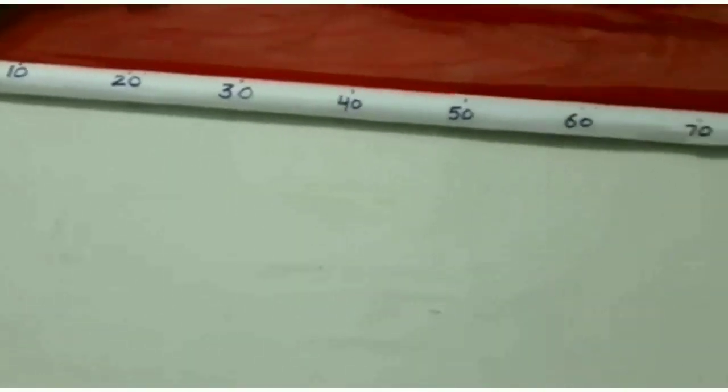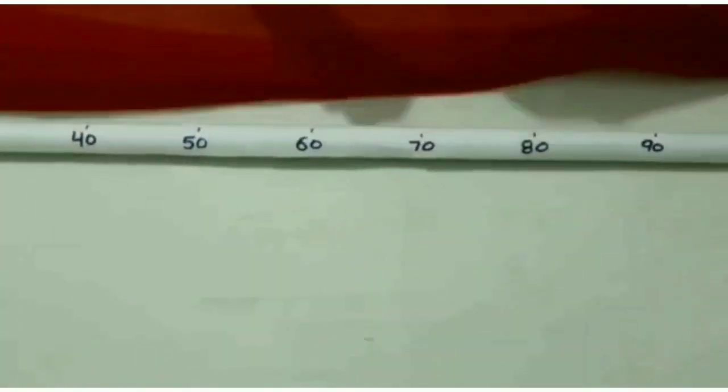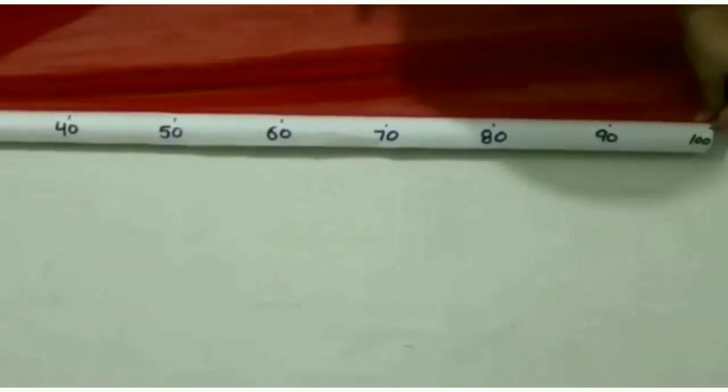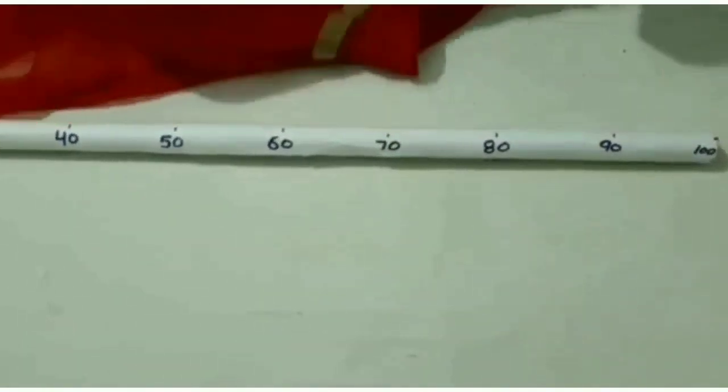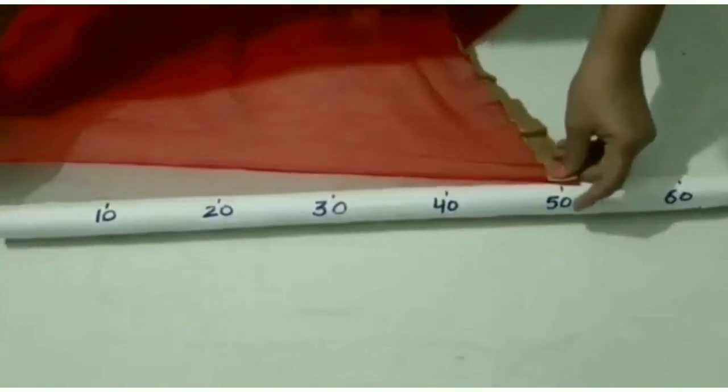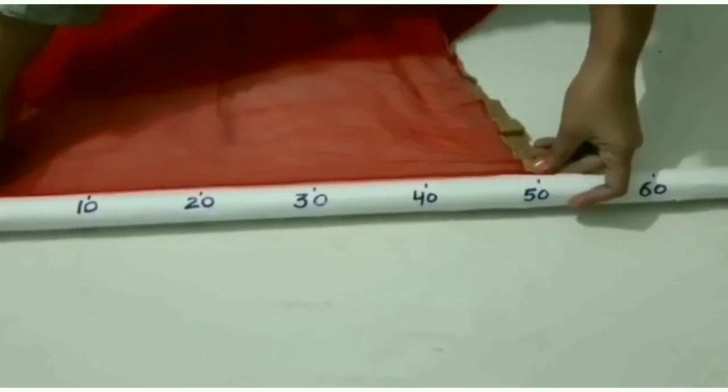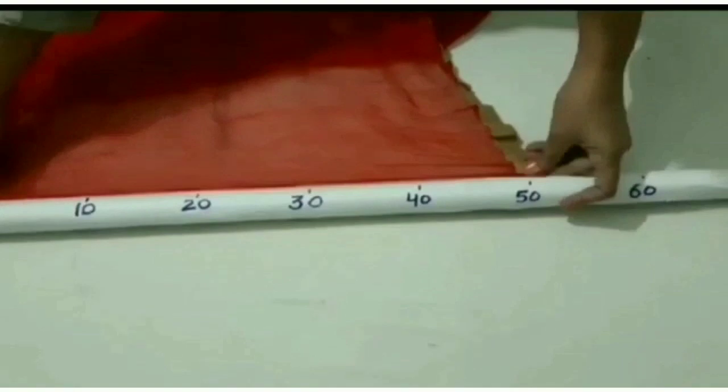Again we will put the remaining cloth at the starting point and notice the other end. Yes, its length is two meters. Now we will measure the remaining cloth again. Its length is fifty centimeters, so its total length is two meters and fifty centimeters.